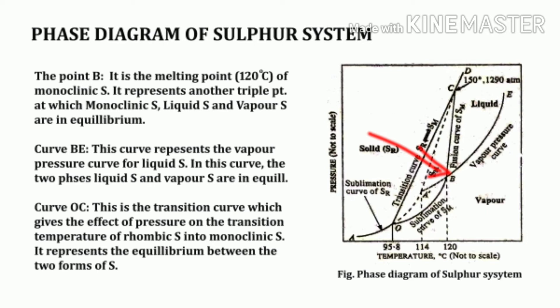Point B is the melting point of monoclinic sulfur at 120°C. This is another triple point at which three phases — monoclinic sulfur, liquid, and vapor sulfur — are in equilibrium, making it a non-variant point. The curve BE is the vapor pressure curve for liquid sulfur; along this curve the two phases in equilibrium are liquid sulfur and sulfur vapor — a monovariant system. The curve OC is called the transition curve, giving the effect of pressure on the transition temperature of rhombic sulfur into monoclinic sulfur.